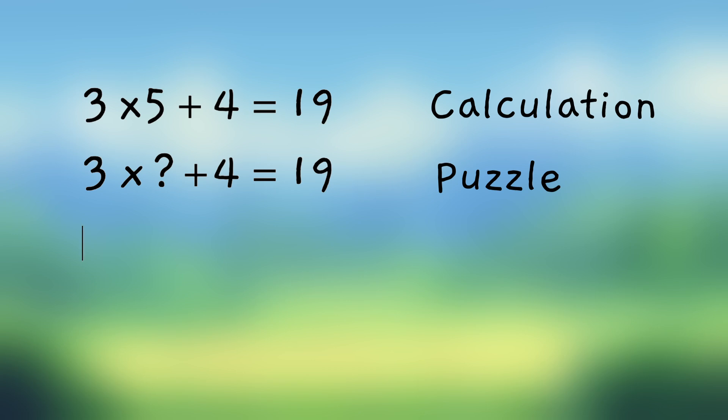And so instead what we do is we use letters. In this example, let's use the letter U to stand for the unknown number. That gives us 3 times U plus 4 equals 19.